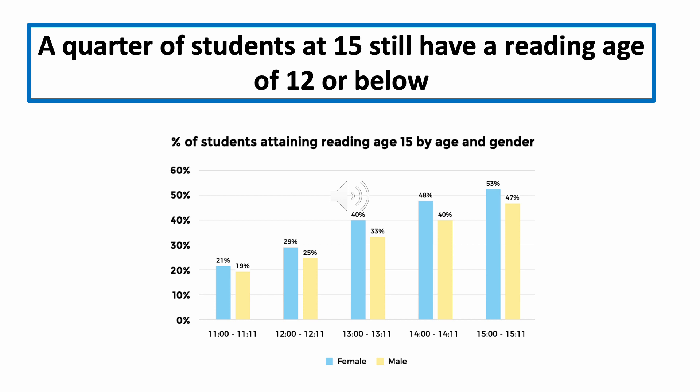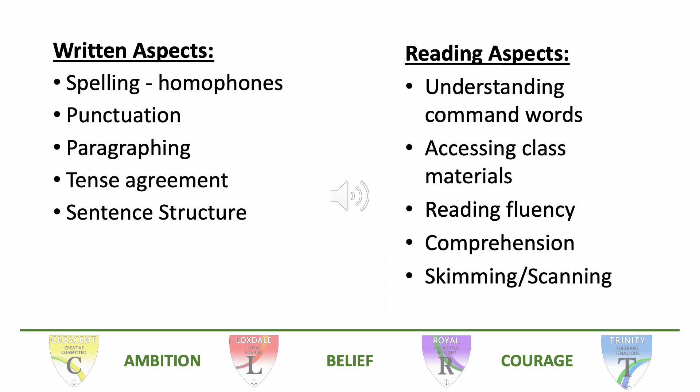A recent study found that a quarter of students at 15 still have a reading age of 12 or below. Significantly, boys are more likely than girls to have a reading age below that which is required to be successful at GCSE. Students who don't read regularly are more likely to struggle with both their reading and their writing. Common difficulties with writing include spelling — particularly spellings of homophones — punctuation, paragraphing, tense agreement and sentence structure.